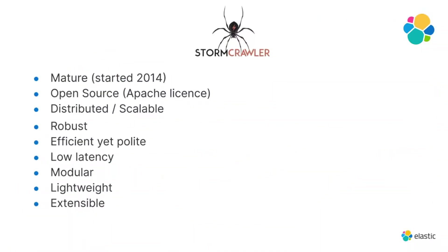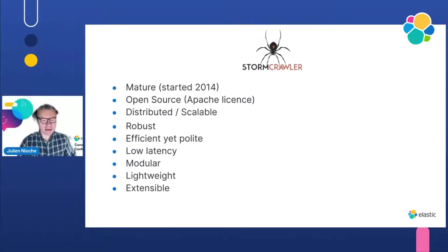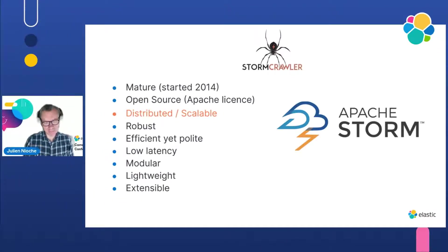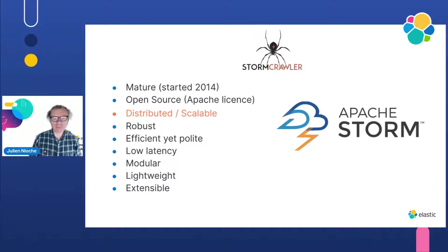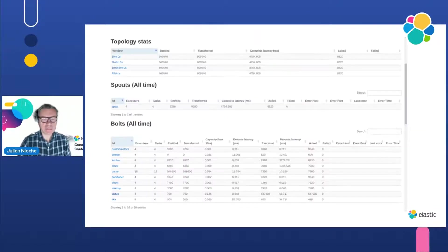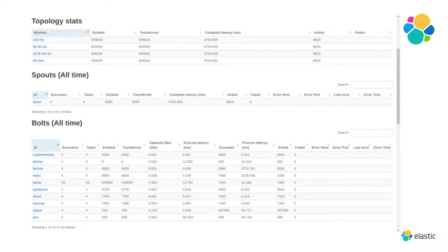Stormcrawler is a mature distributed web crawler based on Apache Storm. I started it around seven years ago. It is scalable and distributed through Apache Storm, which is an established platform for distributed processing based on streams. Here you can see the Storm UI showing the various components that make up what's called a crawl topology. Here we have a crawl running on four different machines.